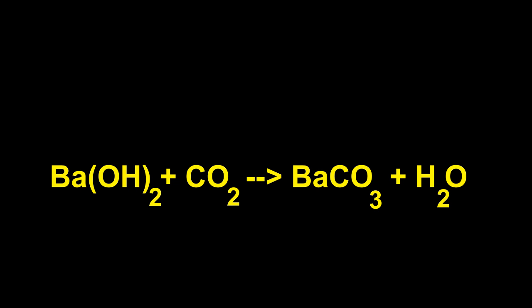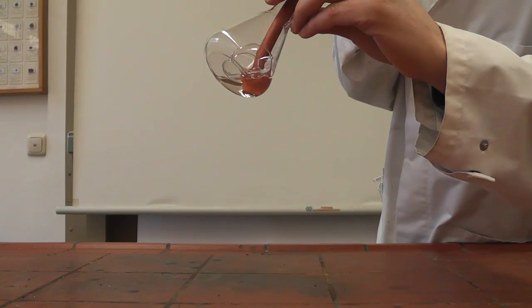You can use barium hydroxide solution as a test for carbon dioxide. This will form barium carbonate, which is insoluble and turns the liquid cloudy. Here I just blew into it. It shows I am exhaling carbon dioxide.